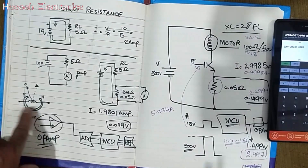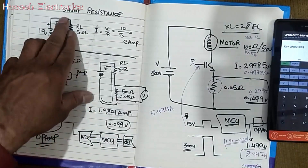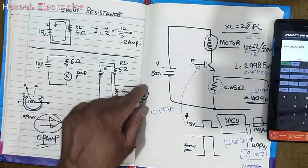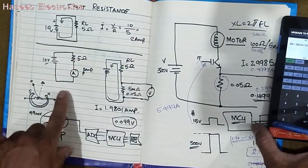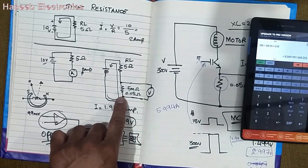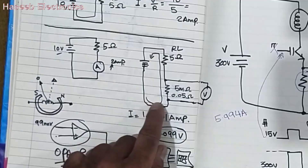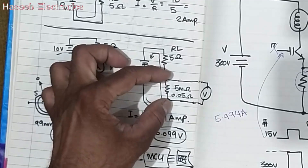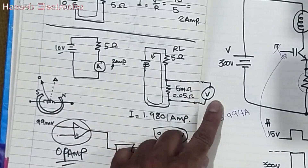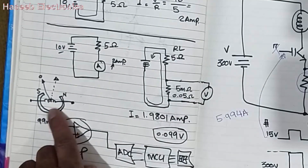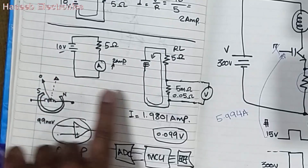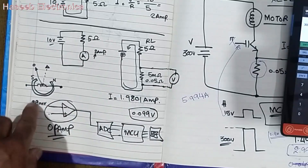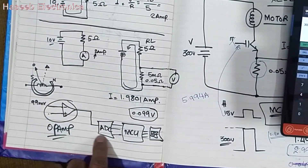In this video we will discuss shunt resistance. It is used always in series with the load to measure current, similar to how an ampere meter measures current. Basically, we apply a shunt resistance to measure current — the complete system current flows through this shunt resistance, and we measure the voltage dropped across it. In analog multimeters, a coil displays the current amount. In digital electronics, this voltage is applied to an operational amplifier and then to an ADC.